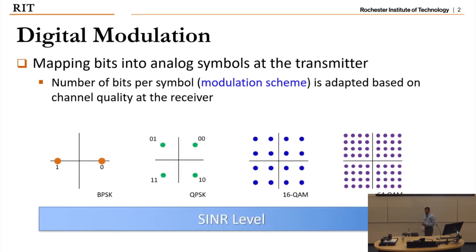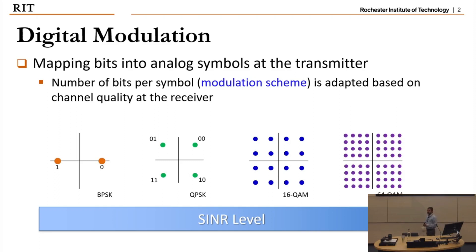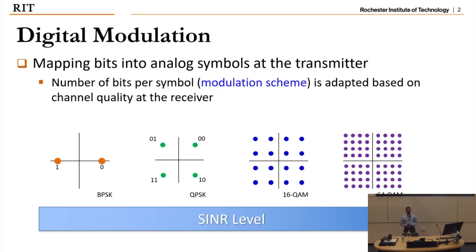For example, consider QAM modulation schemes. As SINR increases, the transmitter can transmit more bits per symbol. In the case of BPSK, it transmits one bit per symbol; QPSK transmits two bits per symbol; 16 QAM transmits four bits per symbol; and 64 QAM transmits six bits per symbol. So there is a clear correlation between the modulation scheme and the number of bits per symbol.